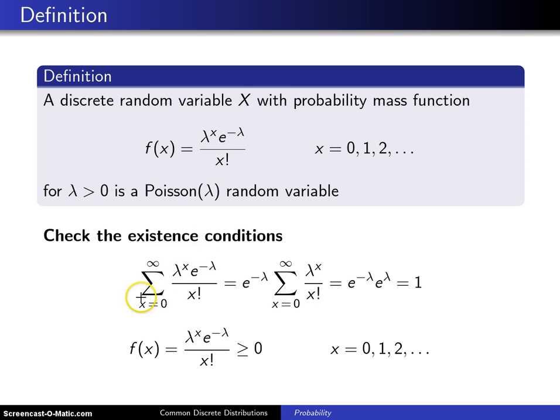First of all, it's discrete, so there will be a summation here rather than an integral. The support runs from x equals 0 to infinity, and here is the probability mass function.